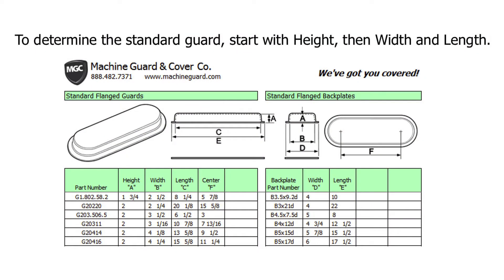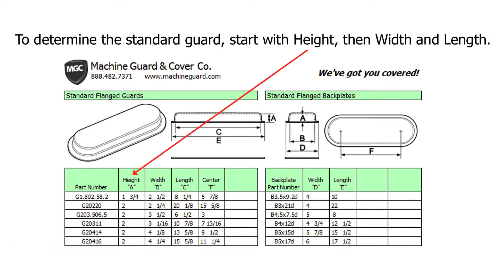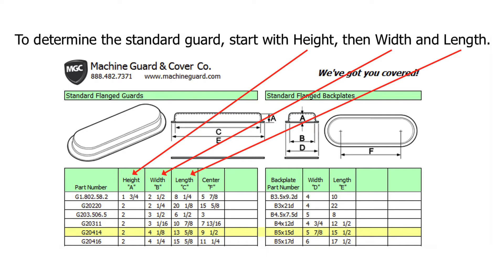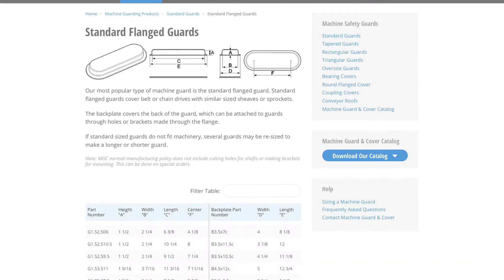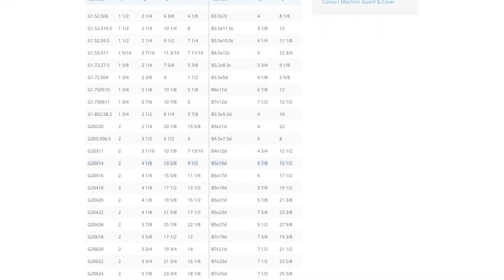To select a standard guard from Machine Guard and Cover's Catalog using the measurements just taken, start with the height first, then the width, and finally the length using the dimensions A, B, and C. Please note the table is sorted by height first from shortest to tallest. Using the example dimensions shown in this video, the standard guard that best fits this scenario is G20414.